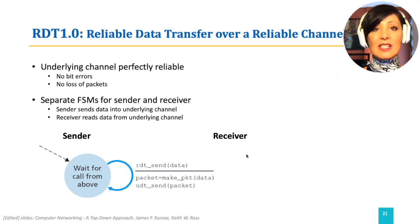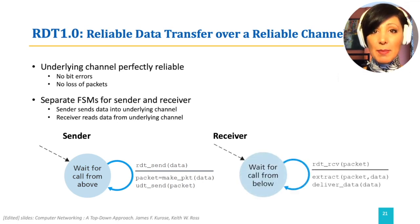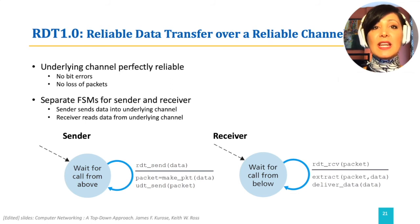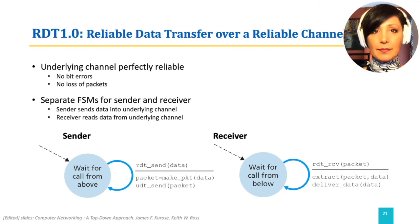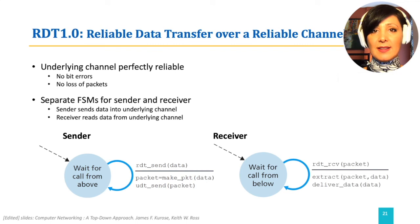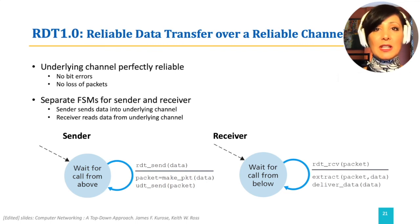On the receiving side, RDT received receives a packet from the underlying channel, removes data from the packet, and passes the data to the upper layer using delivered data. The channel in this communication is perfect. Therefore, there is no additional mechanism needed to compensate for errors that might happen in transmission.